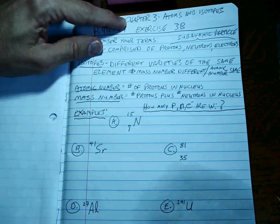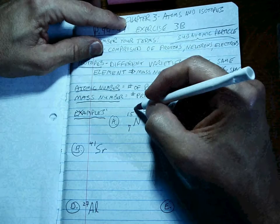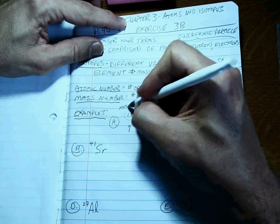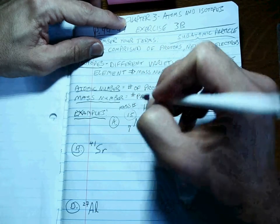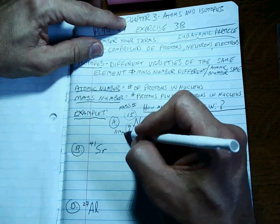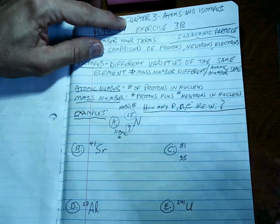Alright, we're back. Let's take a look. Your job is to know that this number up in the corner is the mass number, and this subscripted number is the atomic number.